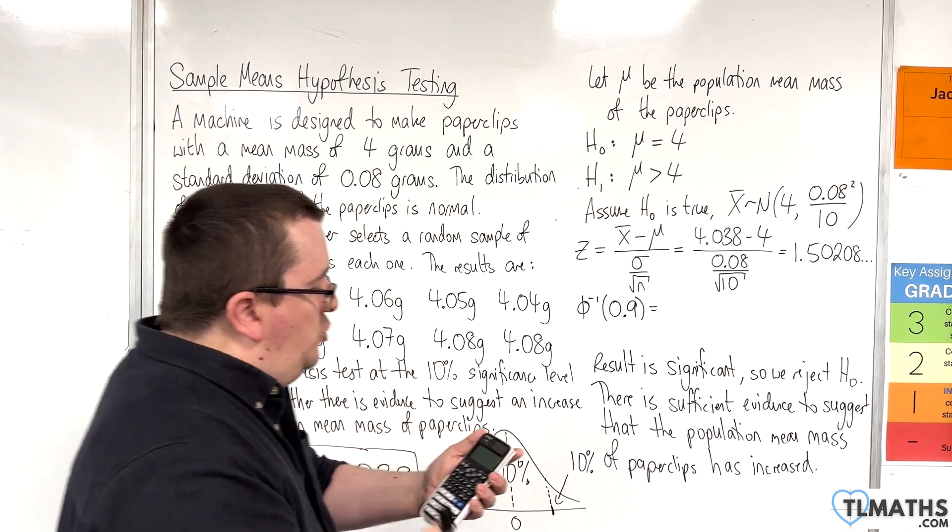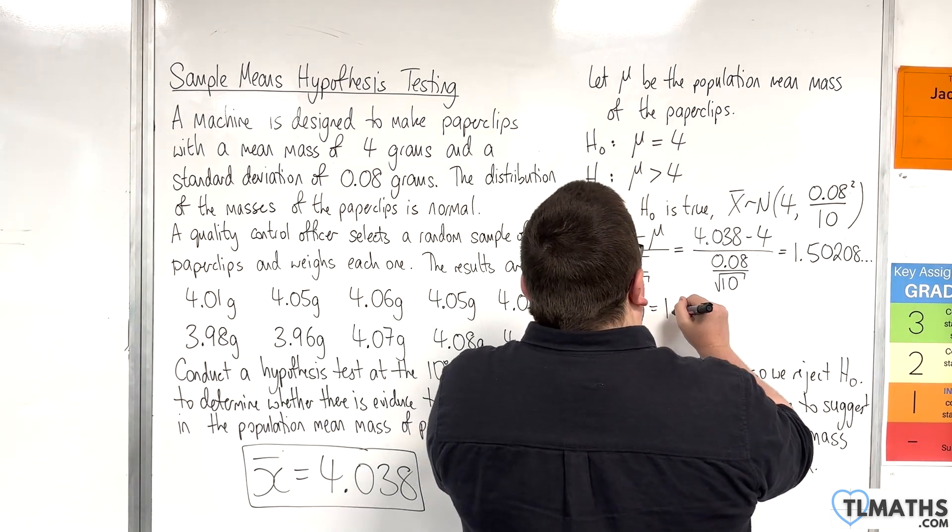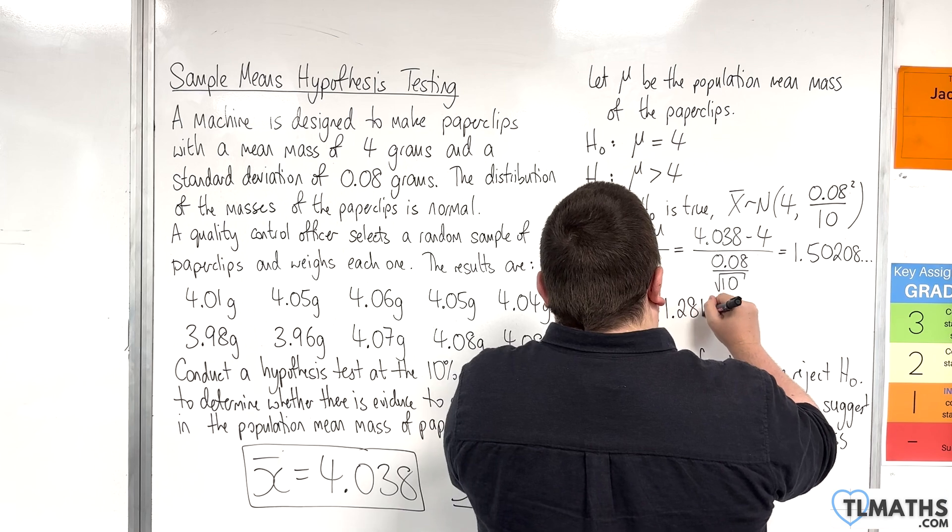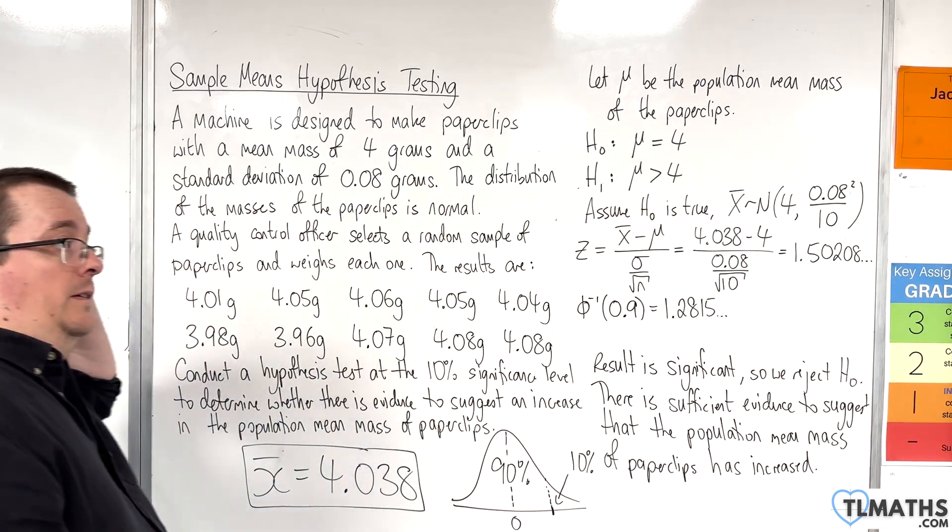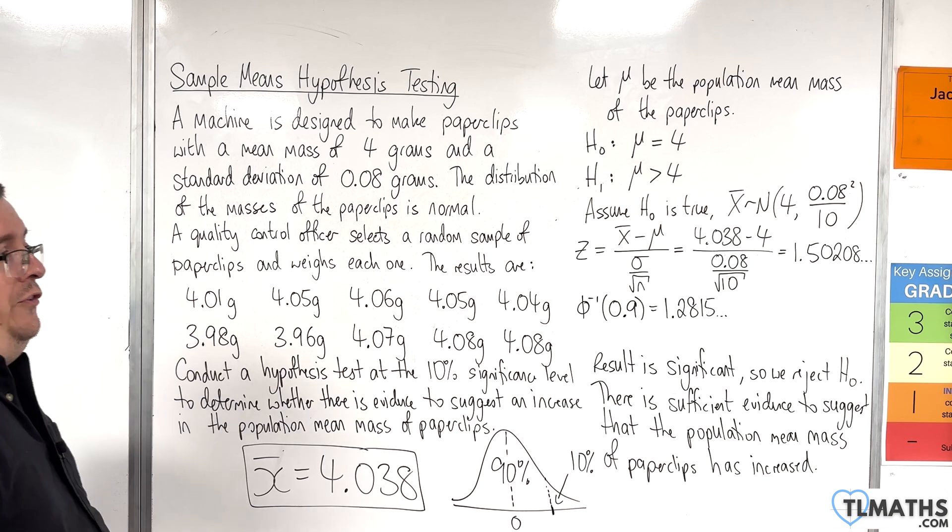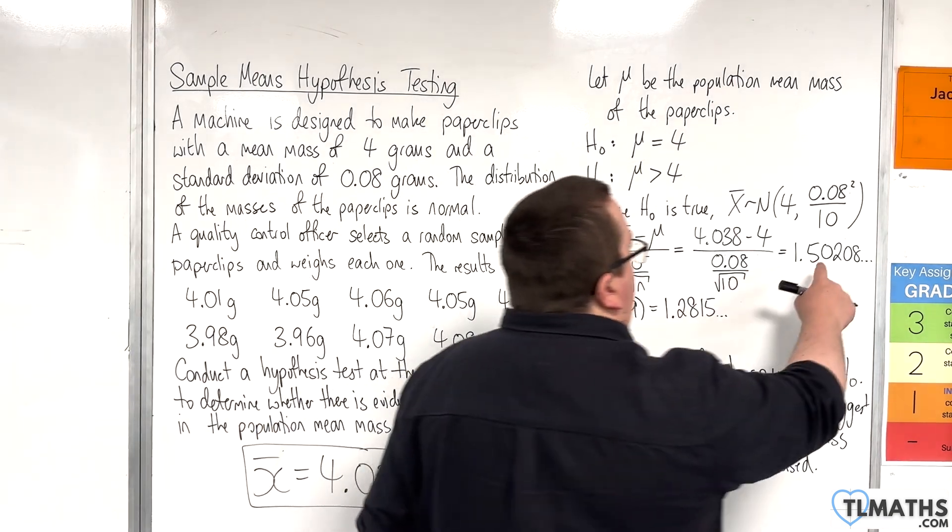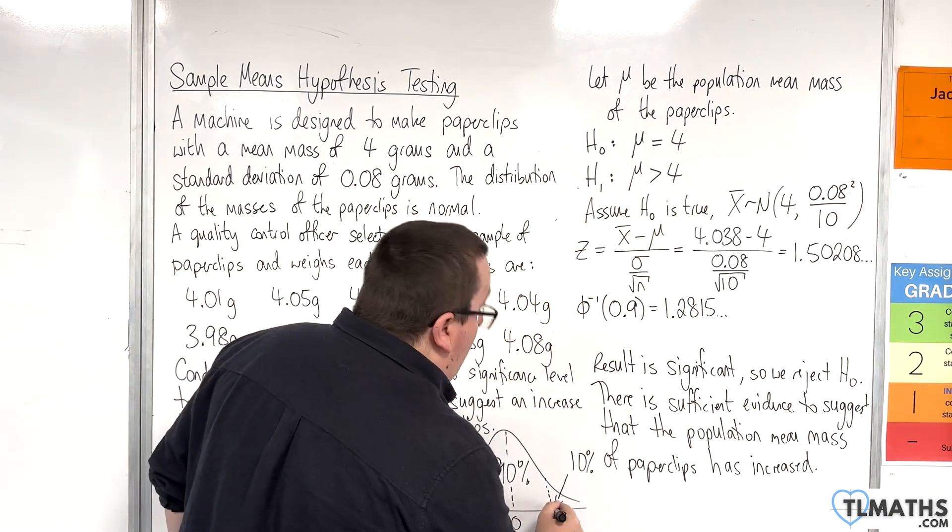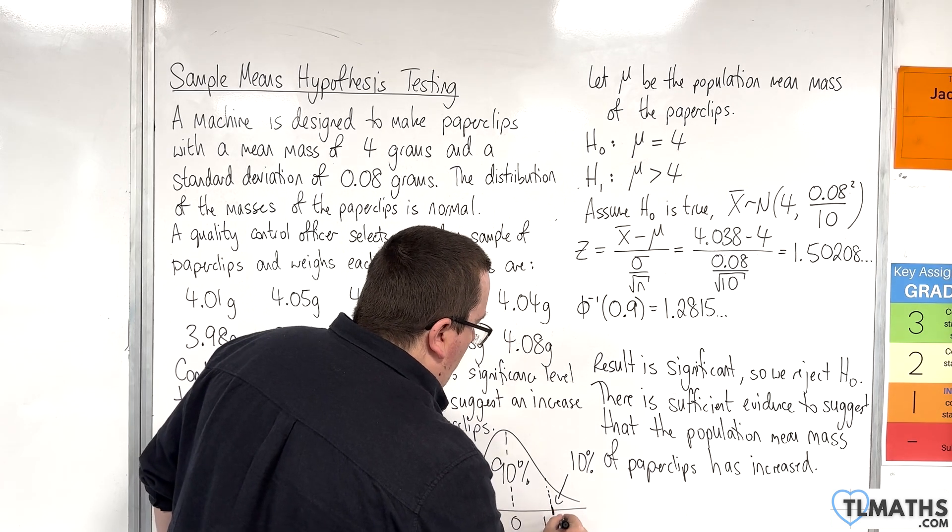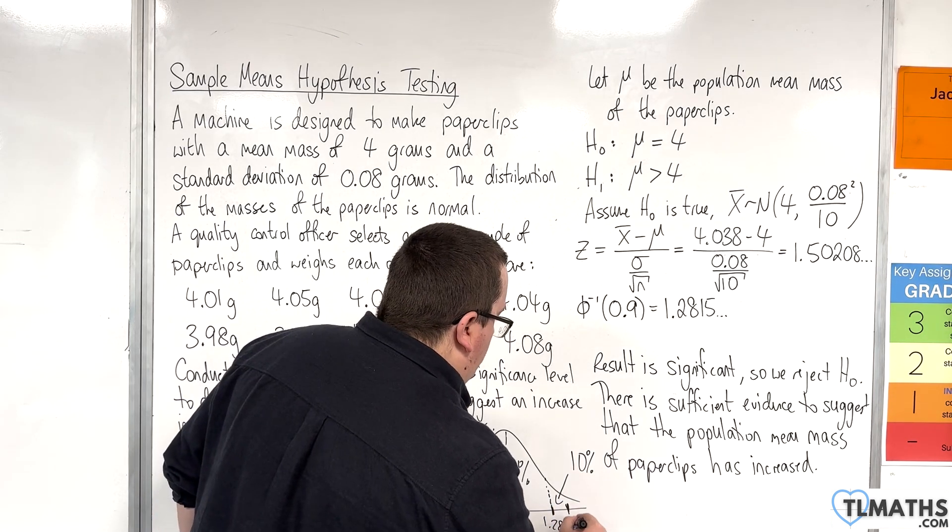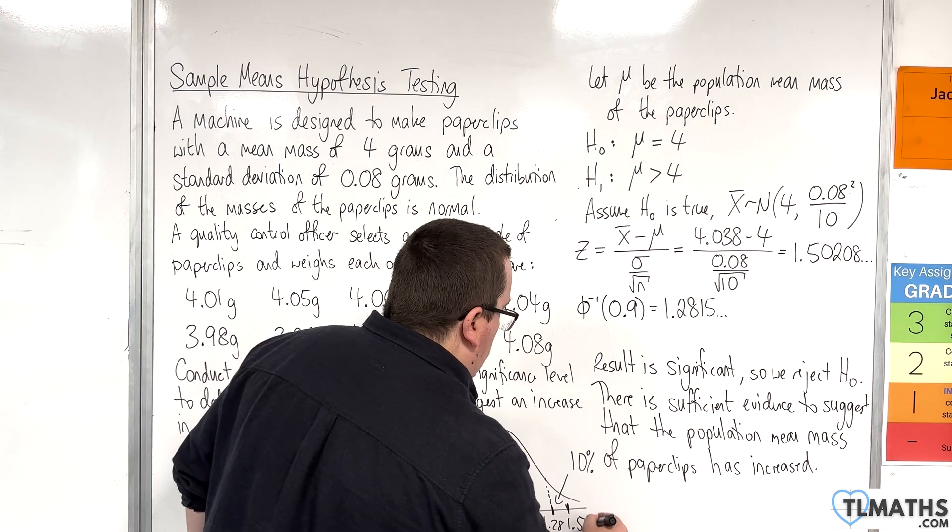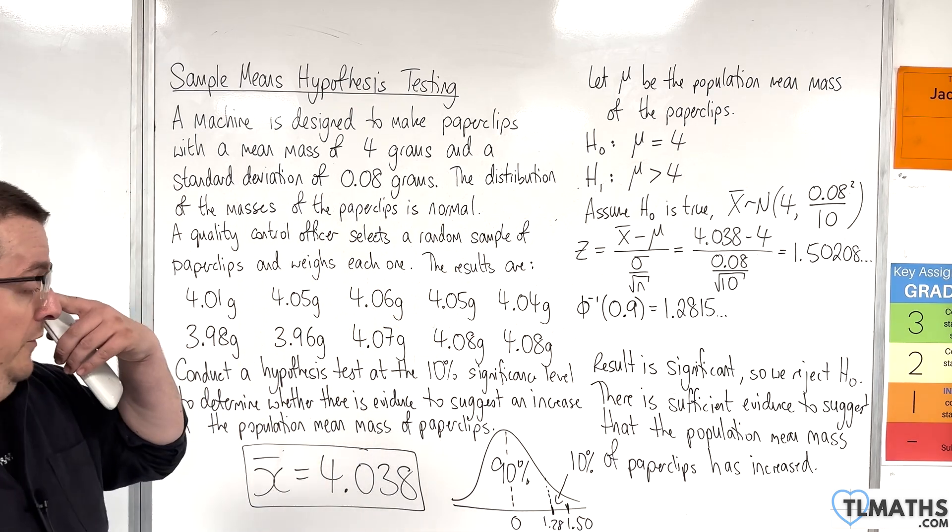Okay, so our value here is clearly larger than that one. So here is your 1.28, and our value is further along, here's our 1.50. So because it's further along, it's in the critical region of the standard normal distribution.